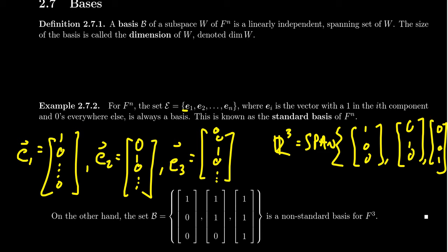But the idea here is the same. If we take these vectors with a single one and zeros everywhere else, we'll call their collection capital E, and this is what we refer to as the standard basis for F^n.